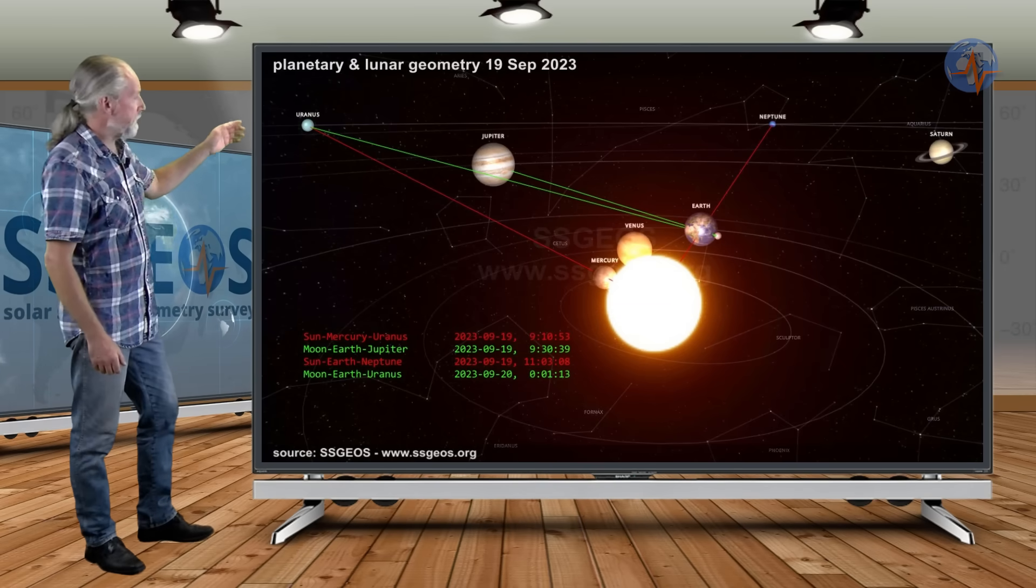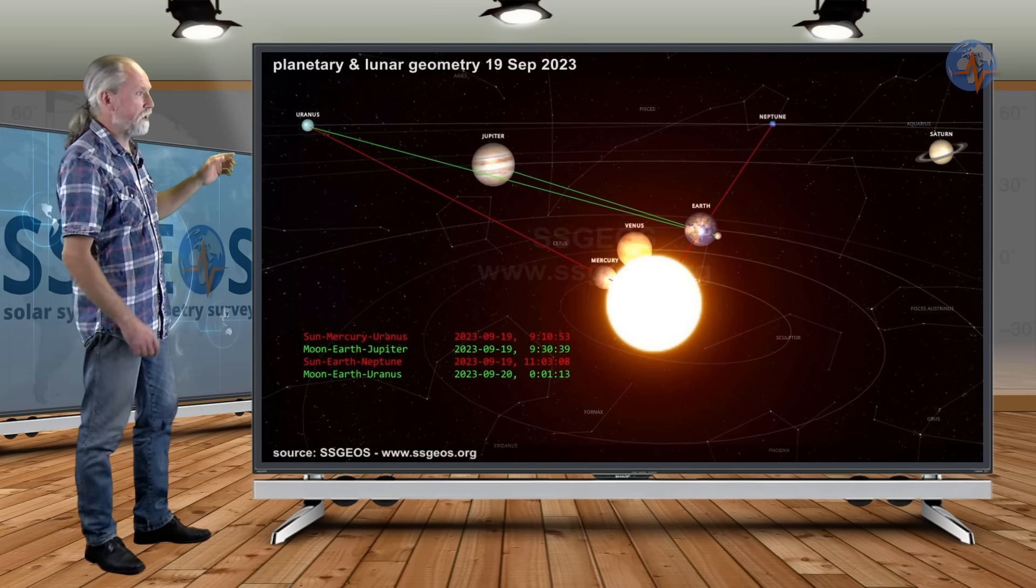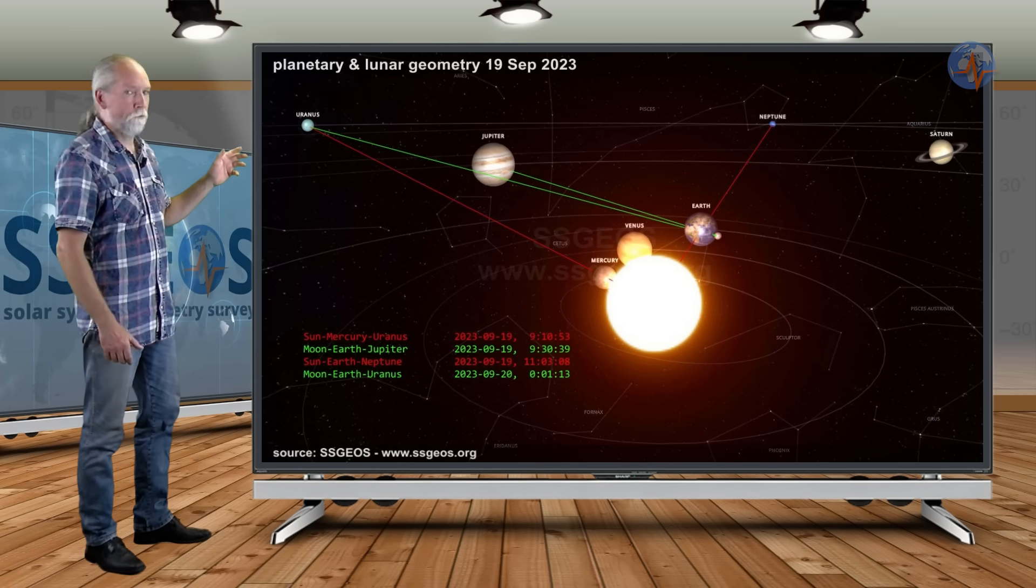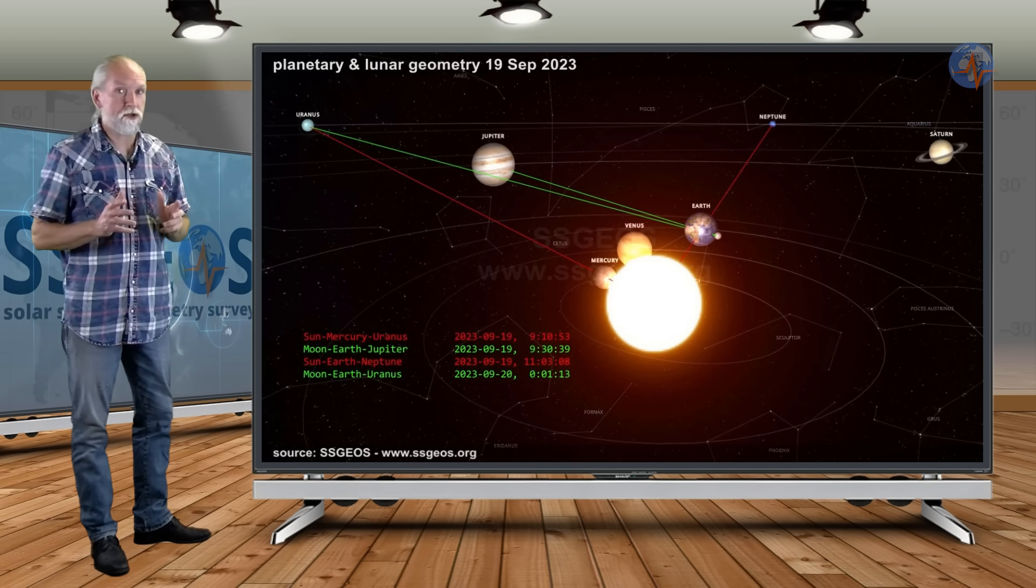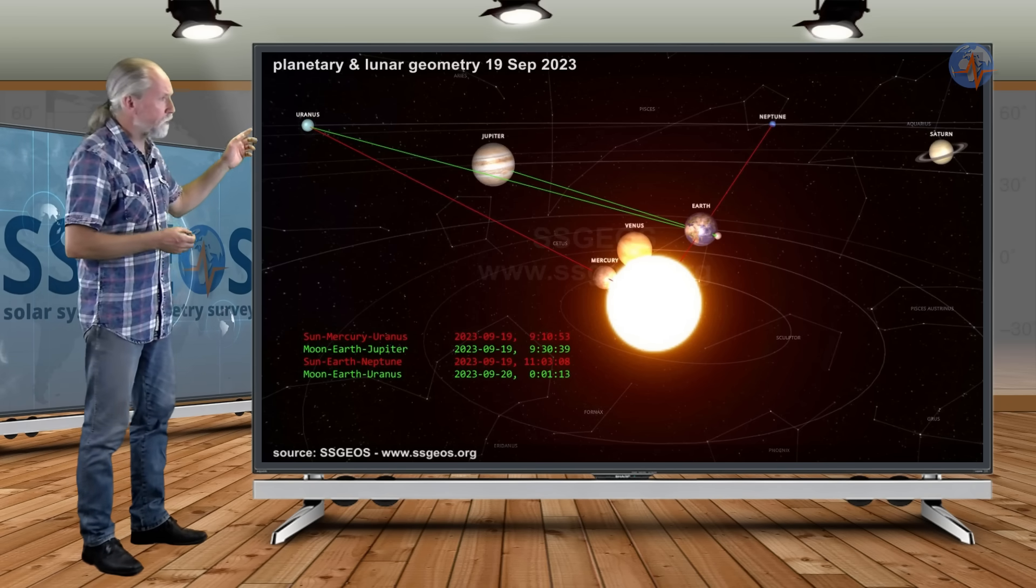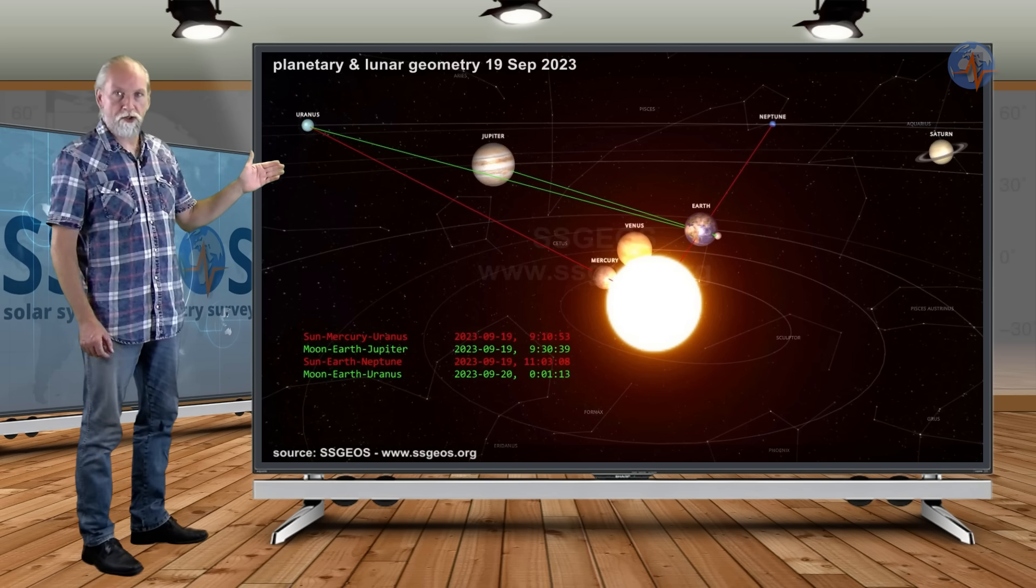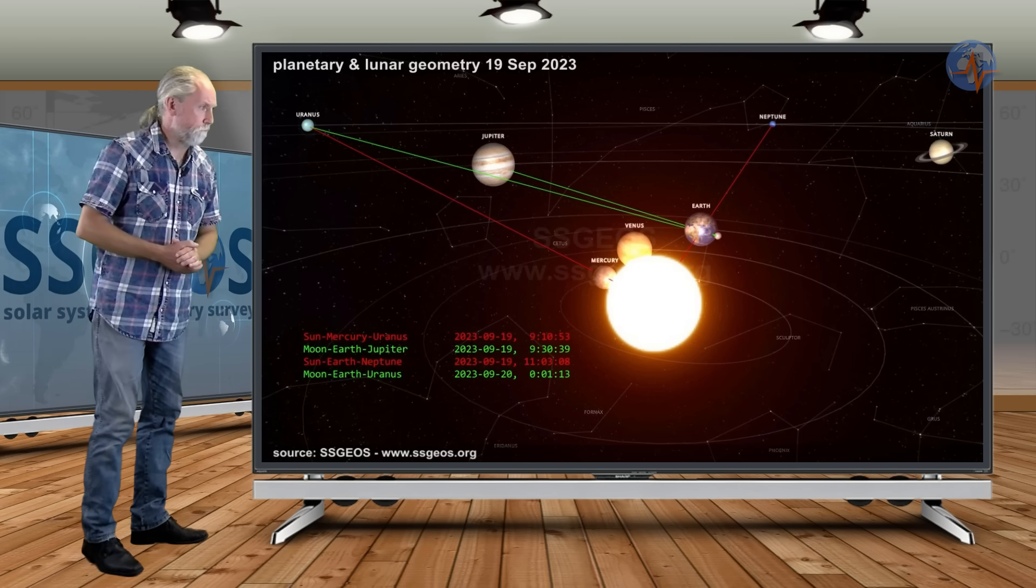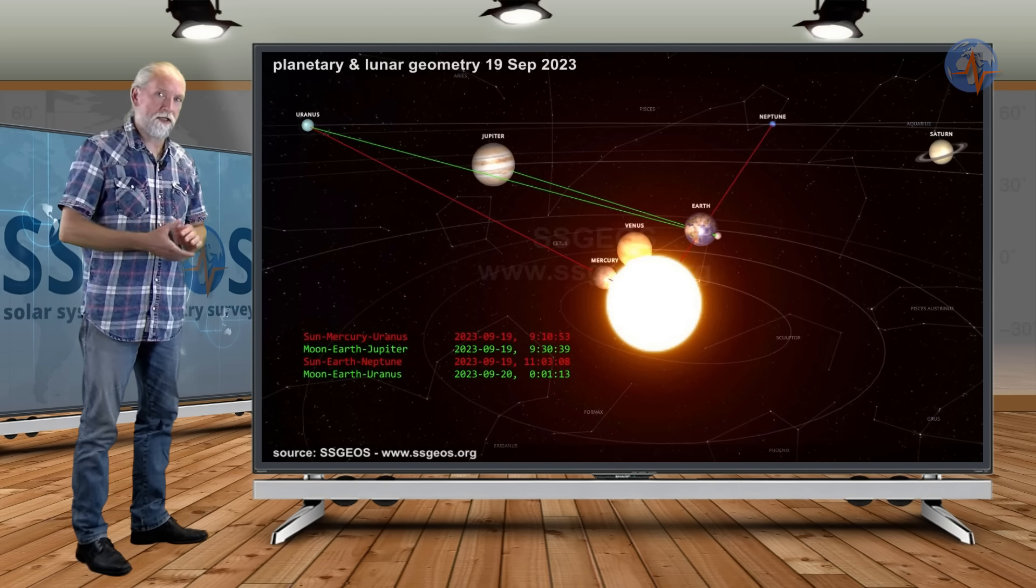In the solar system, we see this planetary and lunar geometry depicted. The red lines, they are the planetary conjunctions, and we see Earth between the Sun and Neptune. And it will converge with a planetary conjunction, Sun-Mercury-Uranus. And that combination can result in pretty strong, maybe even a major seismic event. And we see the lunar geometry, the lunar conjunctions depicted by the green lines. First, a lunar conjunction with Jupiter, shortly after followed by a lunar conjunction with Uranus. This is the planetary and lunar geometry that we're going to have in the next nine days or so.